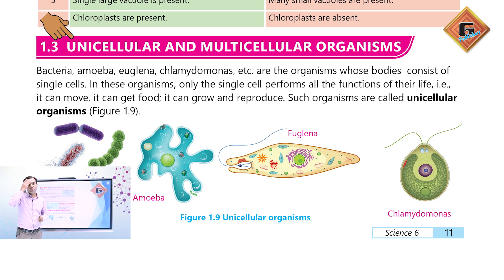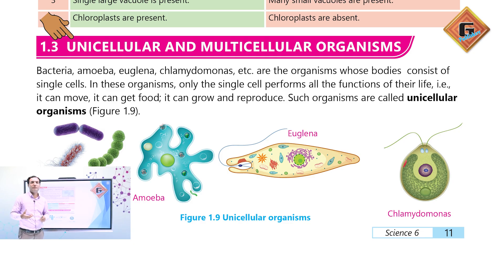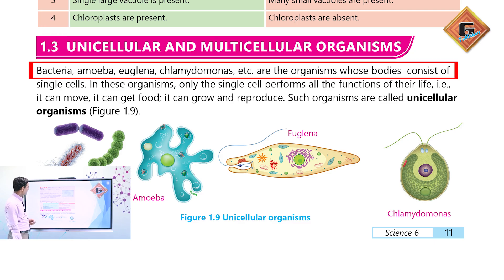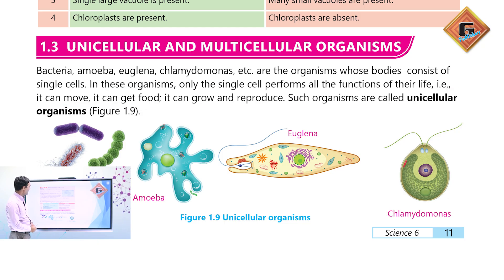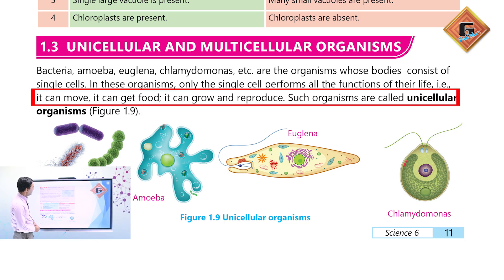Bacteria, amoeba, euglena, and chlamydomonas are organisms whose body consists of a single cell. In these organisms, only a single cell performs all the functions of life — it can move, it can get food, it can grow and reproduce. Such organisms are called unicellular organisms. There are also many organisms which are multicellular, made up of very many cells, and they are complex.